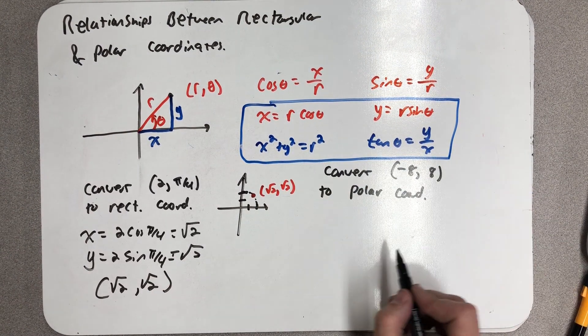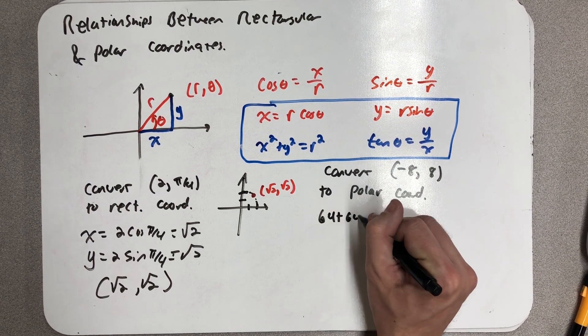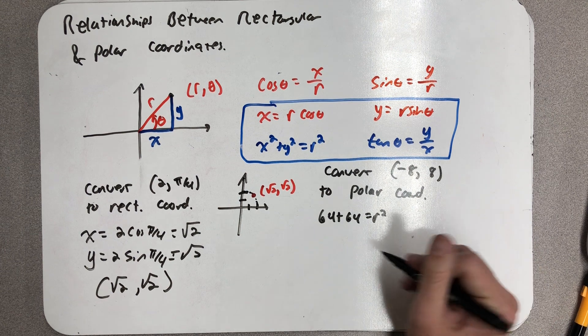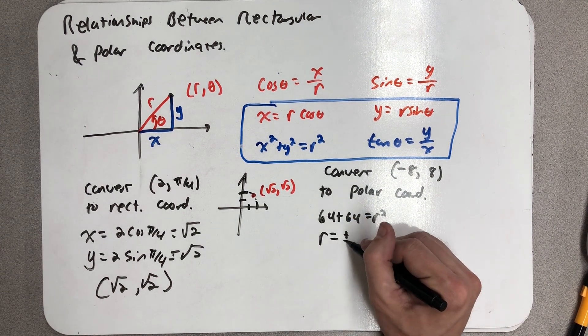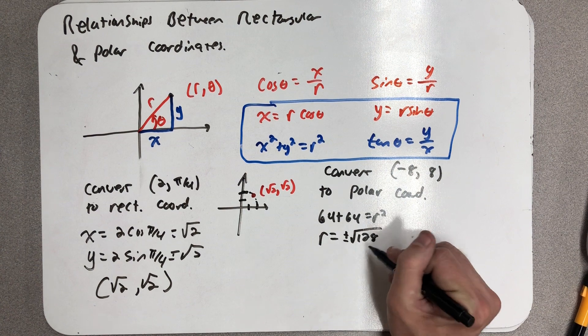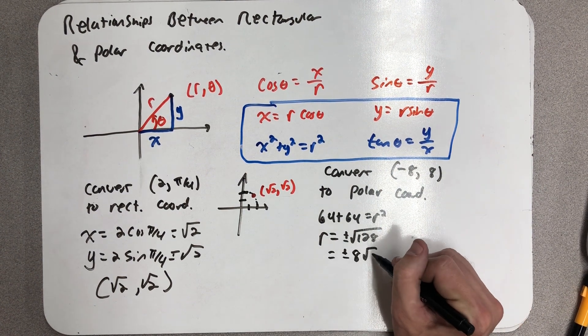x² + y² = r², so 8² + 8² = r², so 64 + 64 is equal to r². Then r is equal to really plus or minus the square root of 128, which is plus or minus 8√2.